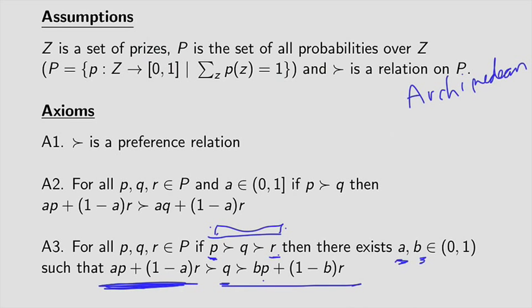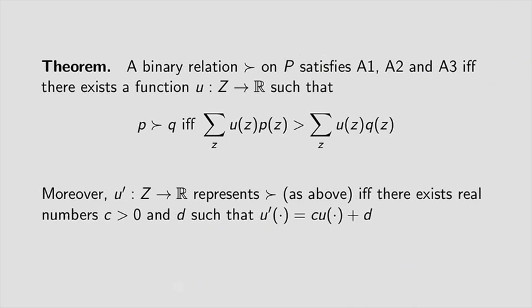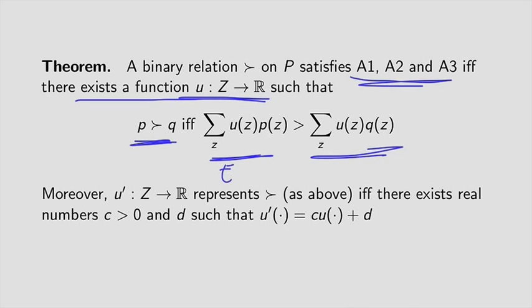So we have these three axioms. And what do we want to prove? So here's our main theorem. Our theorem is that if you have a binary relation on P, and it satisfies these three axioms, that happens exactly when there exists a function, and so this is a utility function, so this assigns utilities to the prizes, such that the agent strictly prefers lottery P over lottery Q, if and only if the expected utility for playing lottery P is strictly greater than the expected utility for playing lottery Q. So this is really the expected utility of playing lottery P, and this is the expected utility of Q.